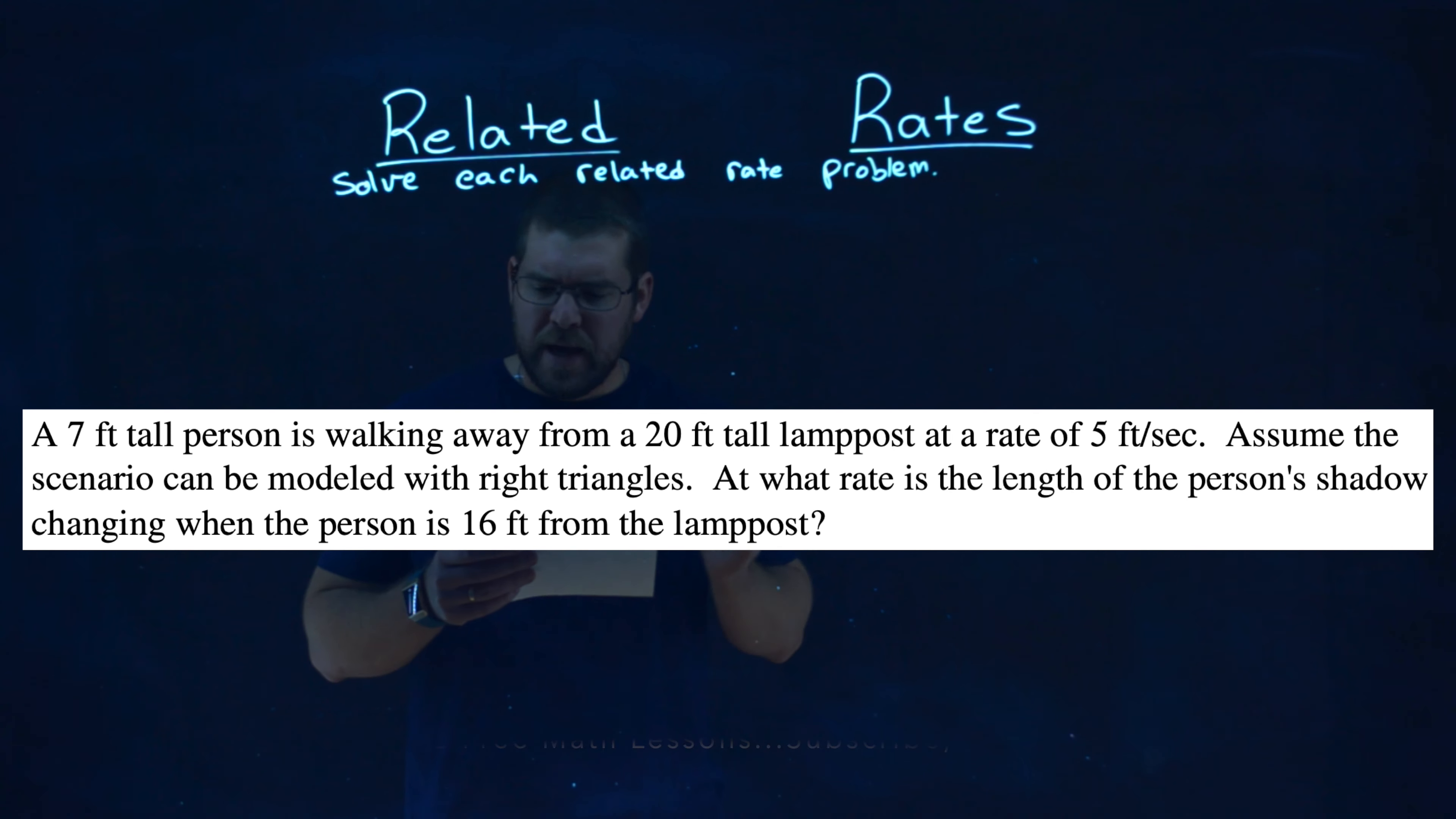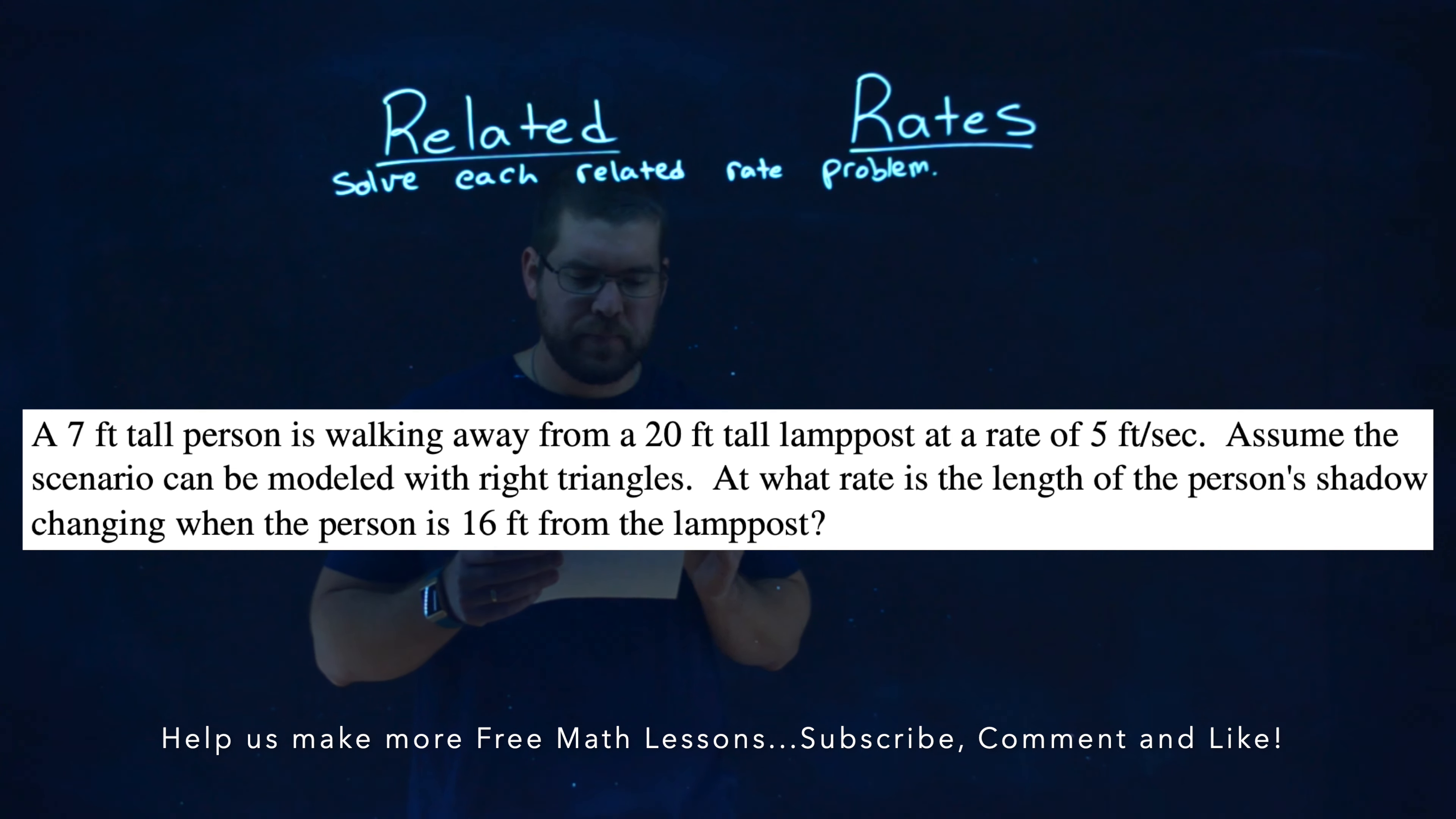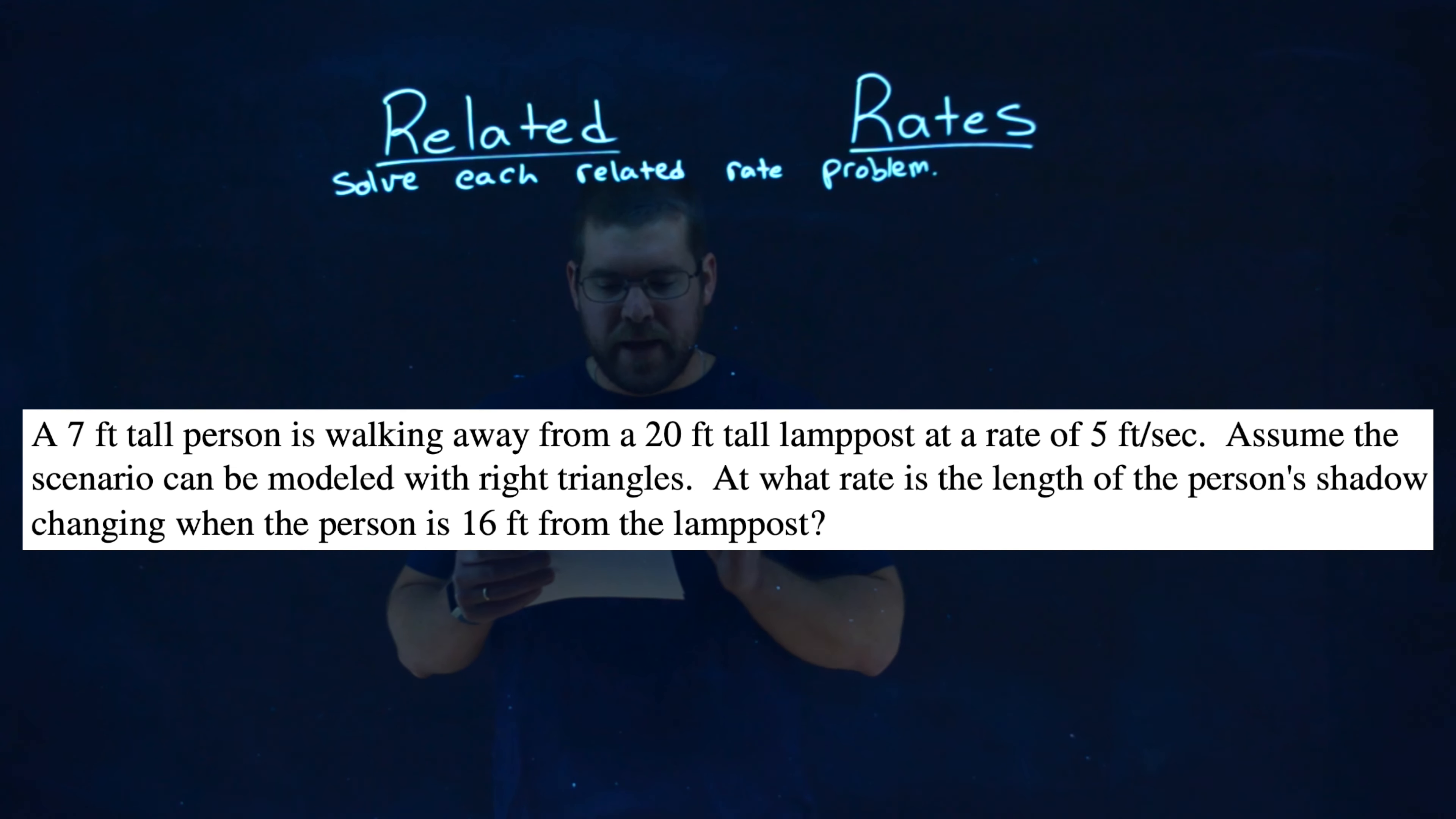We're given this problem right here. A 7 foot tall person is walking away from a 20 foot tall lamppost at a rate of 5 feet per second. Assume the scenario can be modeled with right triangles. At what rate is the length of the person's shadow changing when the person is 16 feet from the lamppost? That's a lot of stuff.